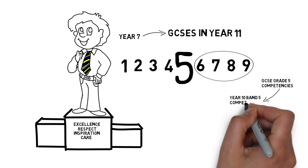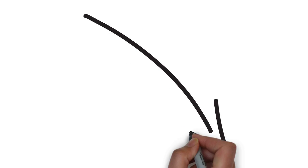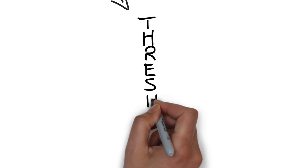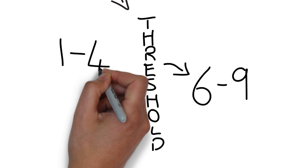This therefore becomes the threshold for Year 10. Students who meet the threshold will be given a Band 5. Students who exceed the threshold will be given a Band 6 to 9. Students who do not meet the threshold will be given a Band 1 to 4.